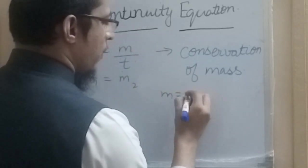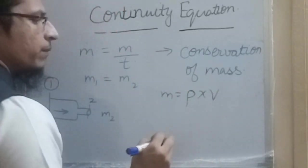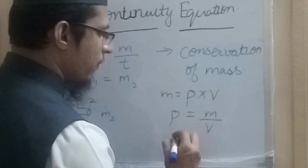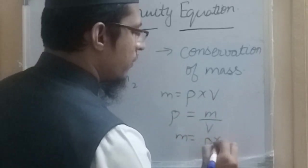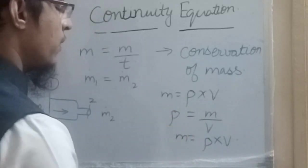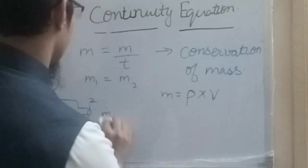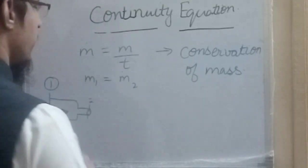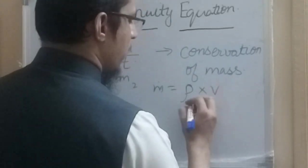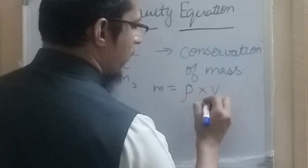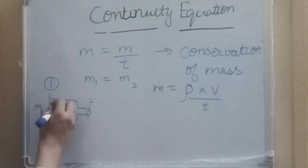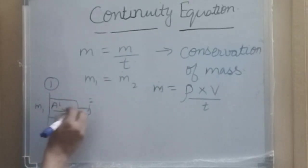Mass flow rate is mass per unit time. Since density is mass upon volume, we get mass equals density times volume. So m-dot equals rho times volume. Volume is cross-sectional area times length, so if L is the flow length traversed in time t,